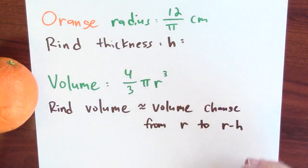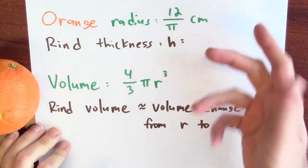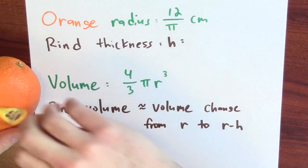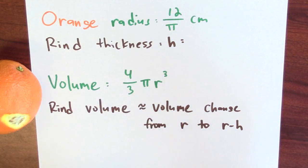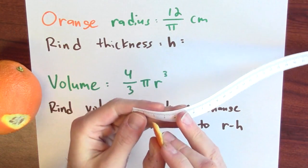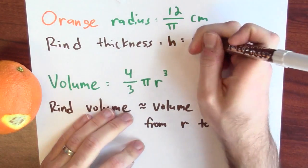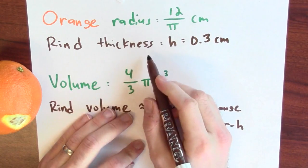That can be formulated as a linear approximation problem. Let's set this up. I just calculated the orange radius to be about 12 over π centimeters. I want to figure out how thick the rind is. Let me peel off a bit of the orange here. I'll measure how thick this is with the same odd little ruler. Maybe 3 millimeters, so 0.3 centimeters will be the rind thickness.